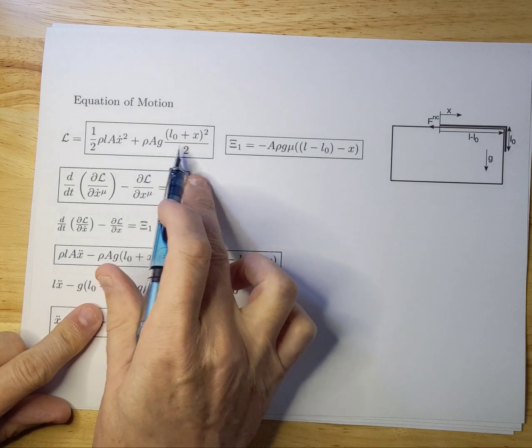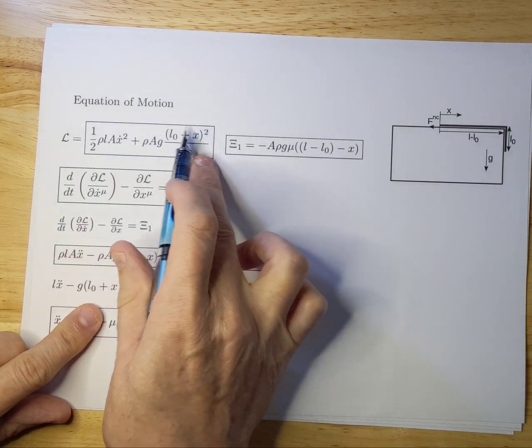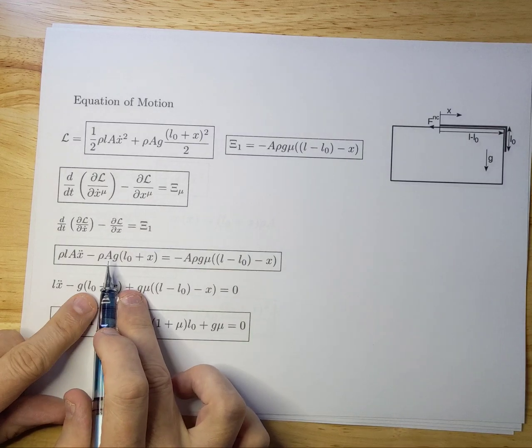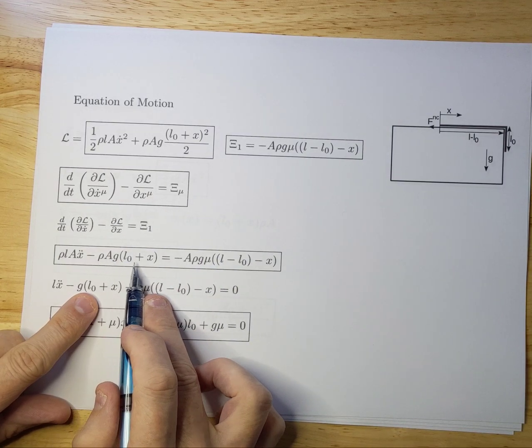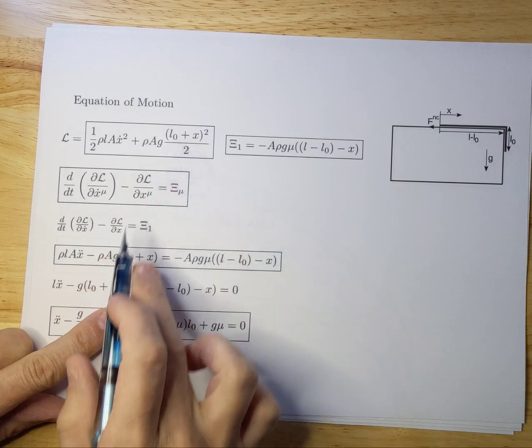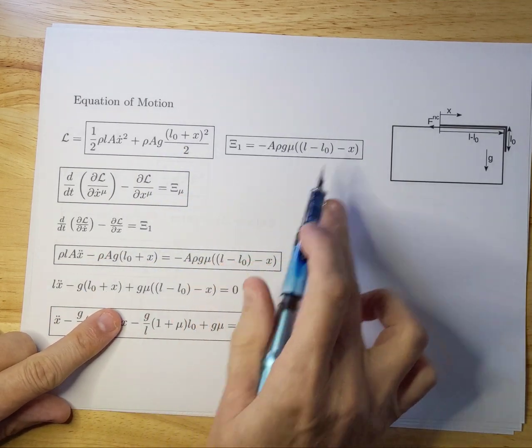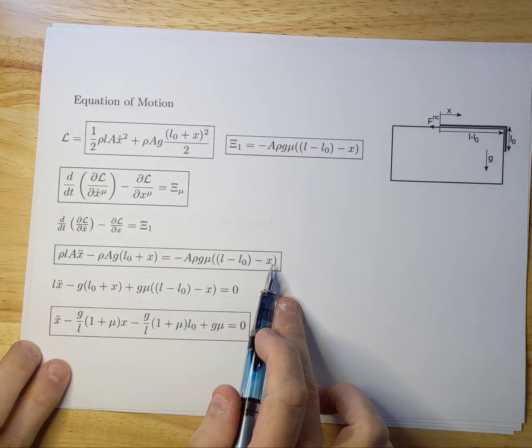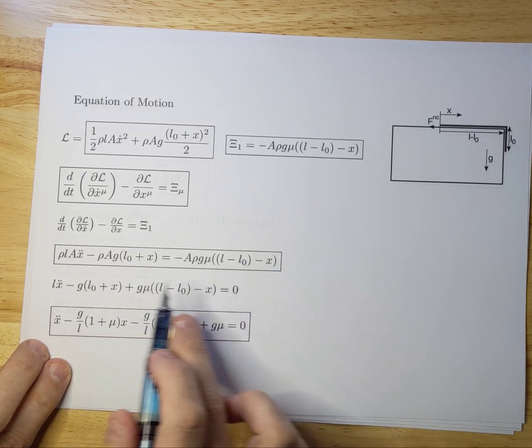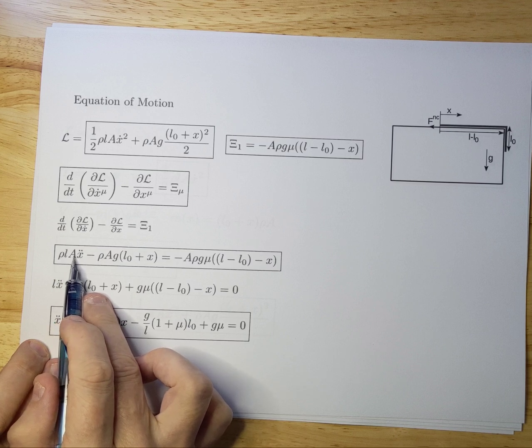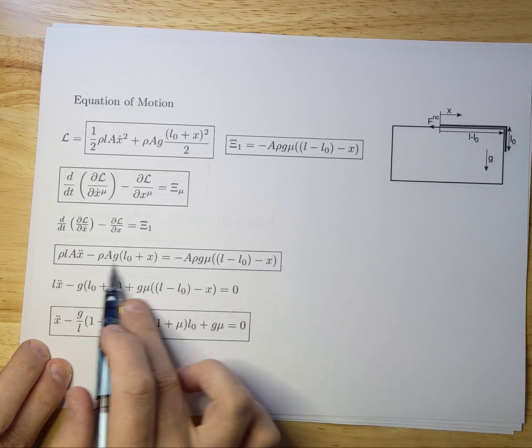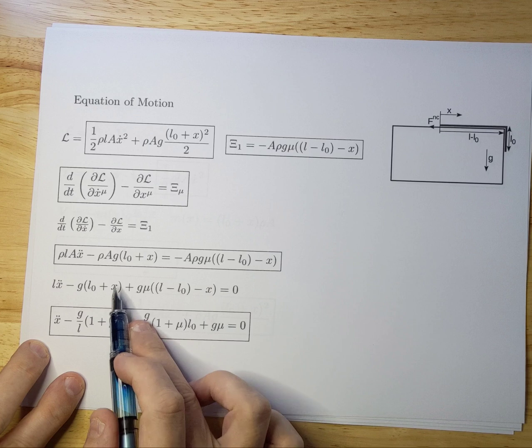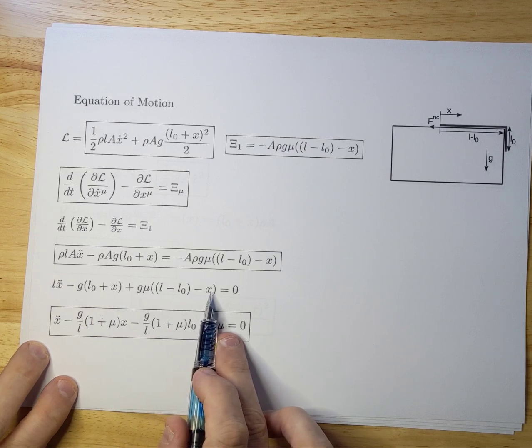Minus the Lagrangian towards X differentiated. So since there's only one X dependency in the Lagrangian, you differentiate this component towards X. And you get Rho times A times G times L zero plus X. Simply differentiating. And that's equal to the non-conservative force over here. So now we're almost at the equation of motion. So we simplify this a little bit by dividing out Rho and A, which is common in all components. So that disappears. And you can see that over here. And I also moved this piece to the other side and made it a plus. And that's the term you see here.